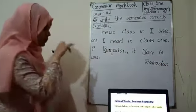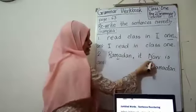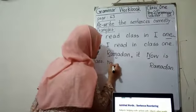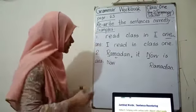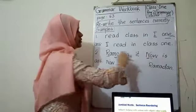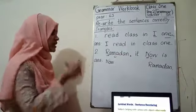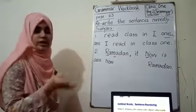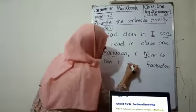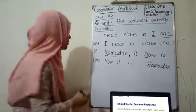Then what are left? 'It now is.' Another capital letter: 'Now' — it will sit at the beginning. So 'Ramadan' is placed at the end, 'Now' at the beginning, and 'it' and 'is' are left. So what will it be — 'Now is it Ramadan' or 'Now it is Ramadan'? Yes, you are correct: 'Now it is Ramadan.'